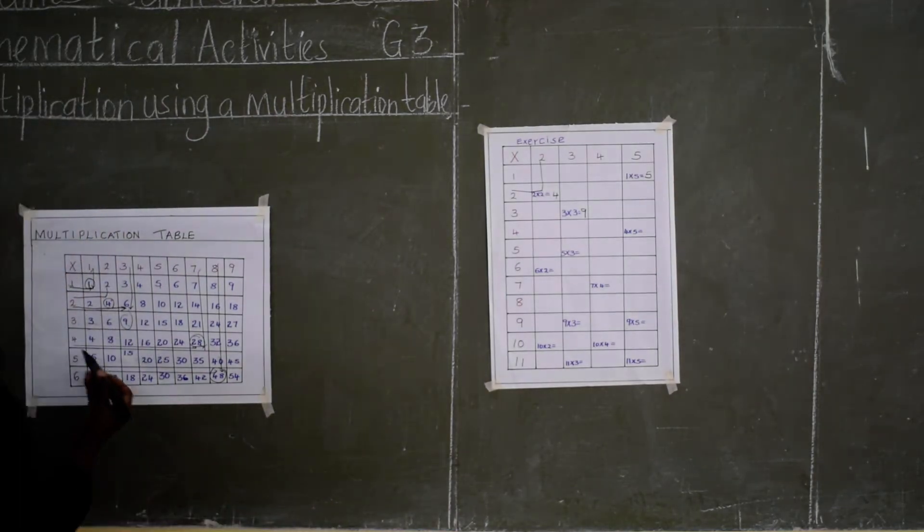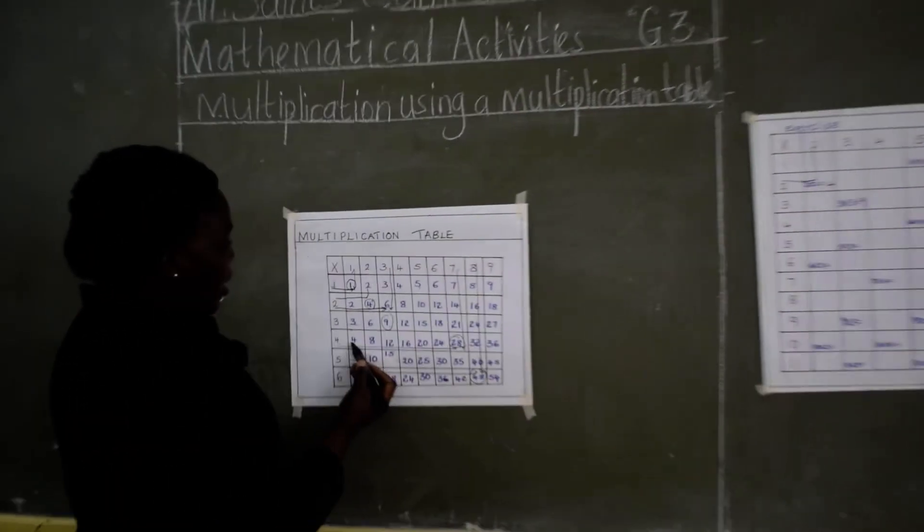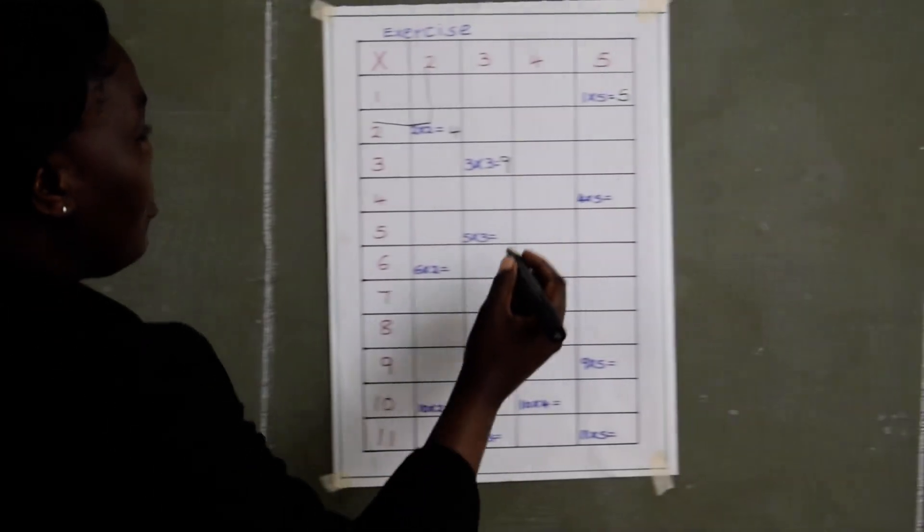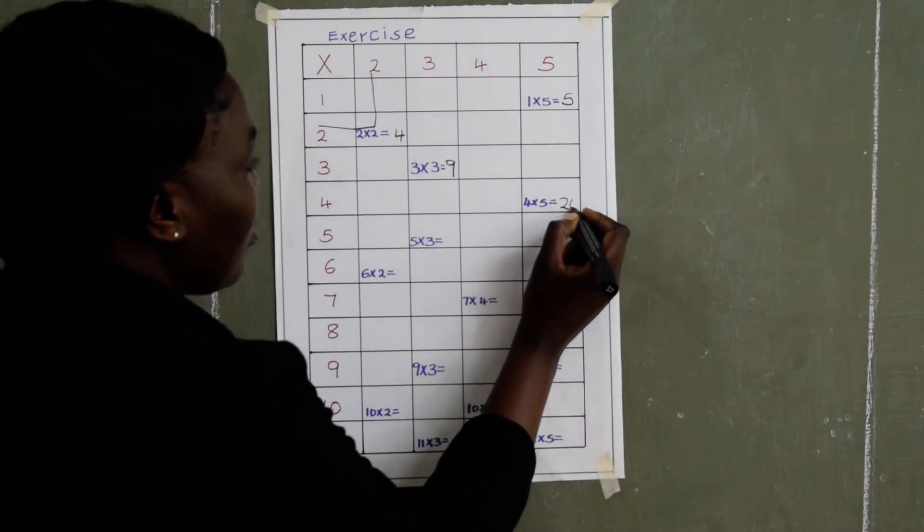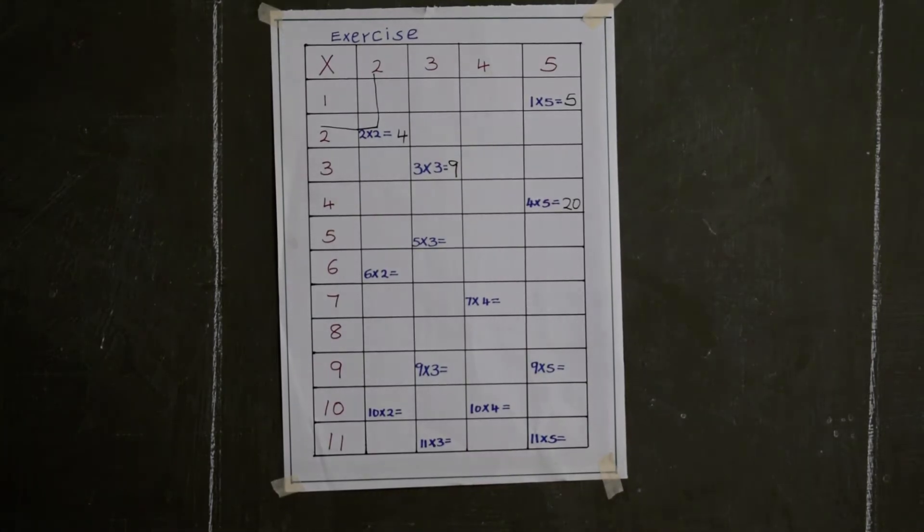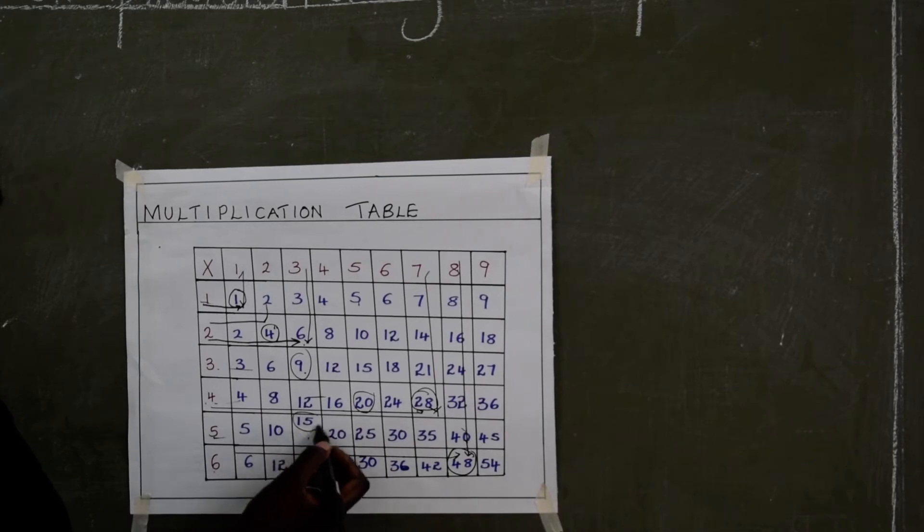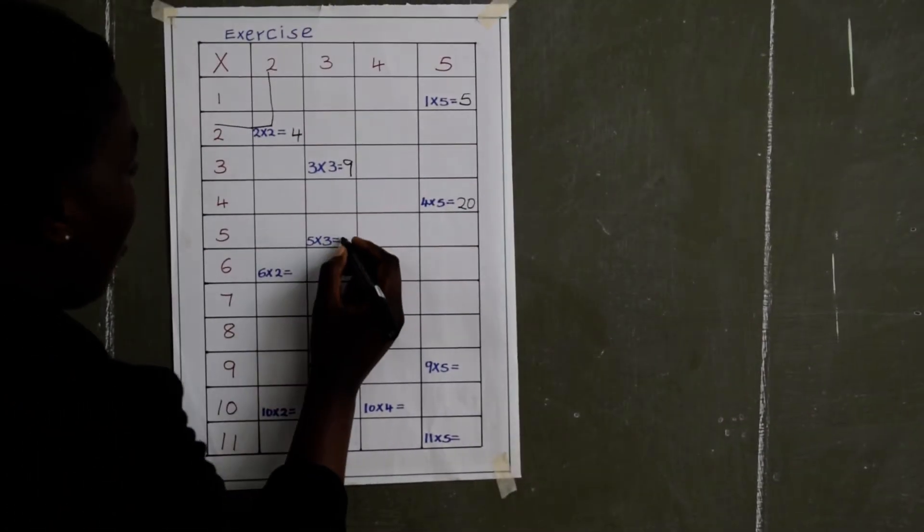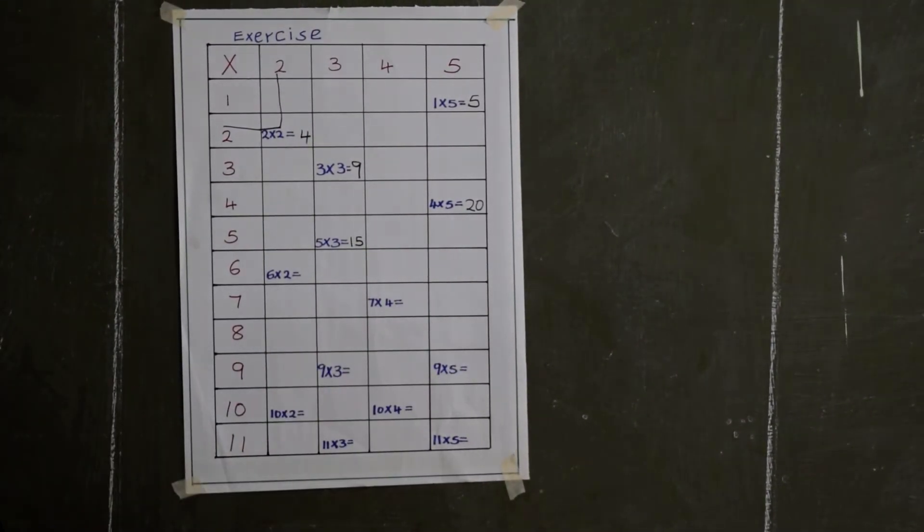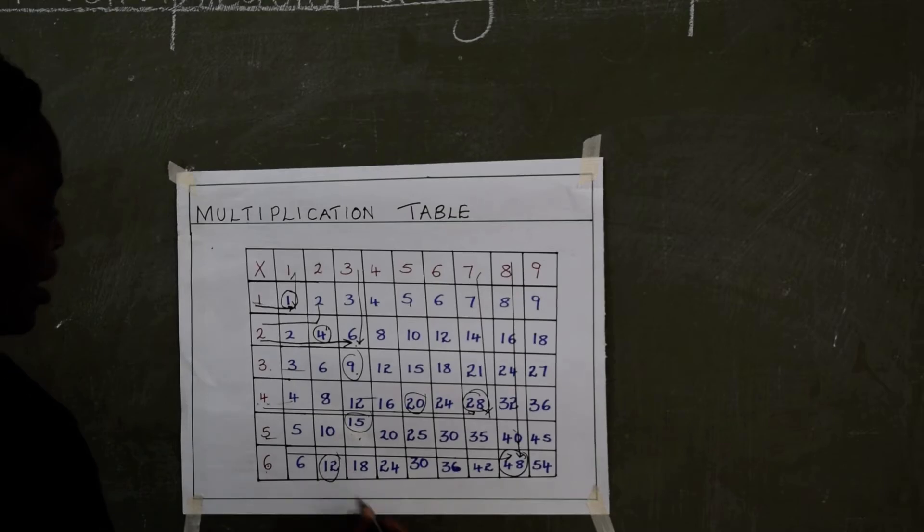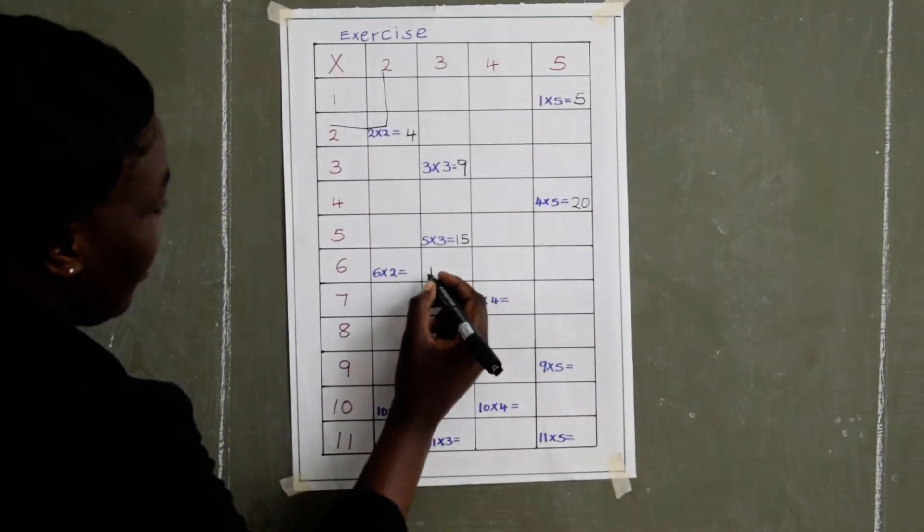4 times 5. So I will go to 4. Then I check where 5 is. They meet at 20. So 4 times 5 is 20. 5 times 3. I will go to 5, then check where 3 is. They meet at 15. So our answer is 15. 6 times 2. I will go to 6, then 2. They meet at 12. So my answer is 12.